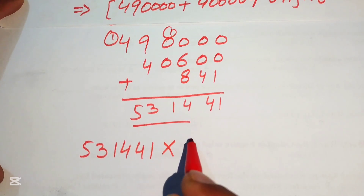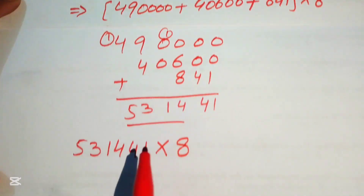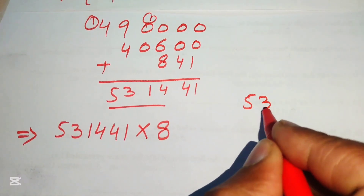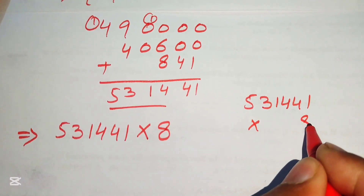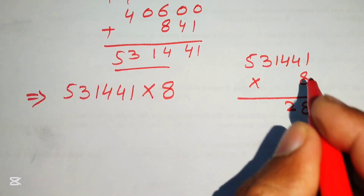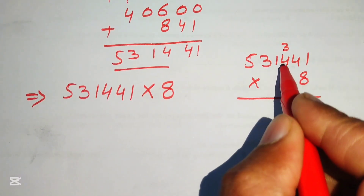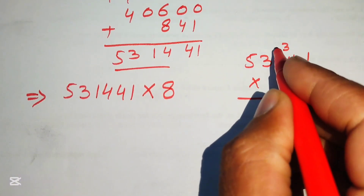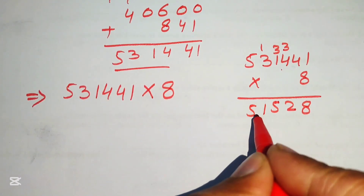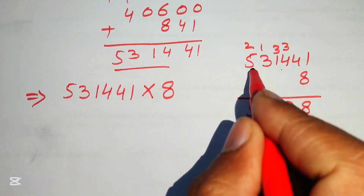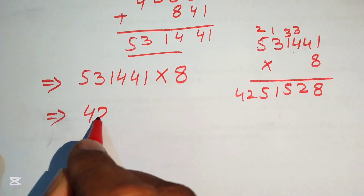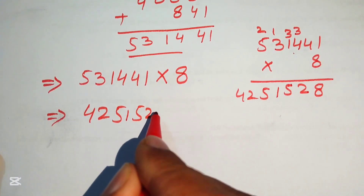Now we multiply 531441 by 8 using traditional long multiplication: 8 times 1 is 8, 8 times 4 is 32 (write 2 carry 3), 8 times 4 is 32 plus 3 is 35 (write 5 carry 3), 8 times 1 is 8 plus 3 is 11 (write 1 carry 1), 8 times 3 is 24 plus 1 is 25 (write 5 carry 2), 8 times 5 is 40 plus 2 is 42. The final answer is 4,251,528.